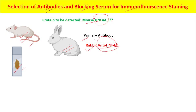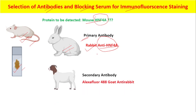So then what should be the secondary antibody? The secondary antibody should be against the source of the primary antibody. The source of the primary antibody is rabbit. Therefore, the secondary antibody should be anti-rabbit.